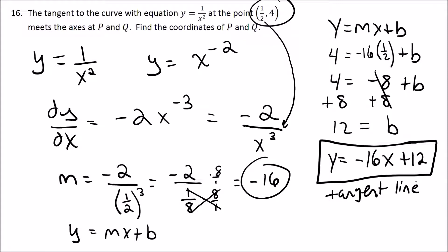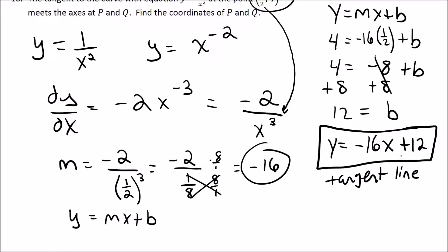Now the question says the tangent line to this curve at that point meets the axes at P and Q. When it meets the axes, you're looking for the intercepts. The y-intercept is just the b value we already found, so it's the point 0, 12. There's our y-intercept, so there's one of our points.